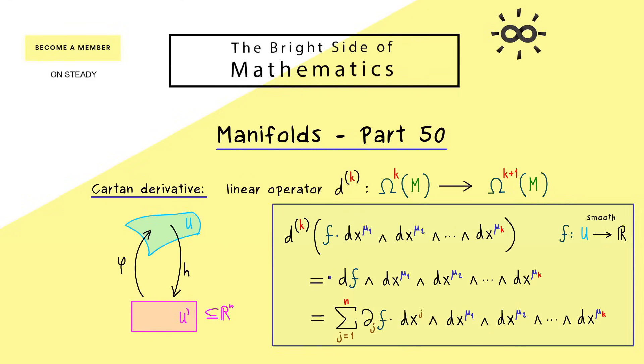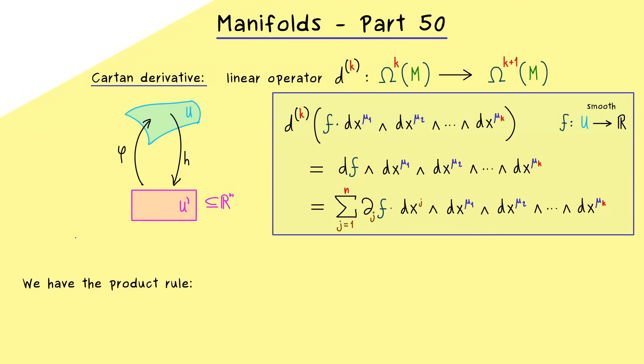Now we can use this definition to actually show the properties we want to have. For example, one of the properties was that we also have a product rule like for the ordinary differentiation. This means if we apply this d operation to a k-form and an l-form which are connected by a wedge product, then we can split it up into a sum of two terms. By linearity we are allowed to keep it simple, so we can just consider this one as our k-form ω. On the other hand, our η can be given by an l-form which has g as a component function.